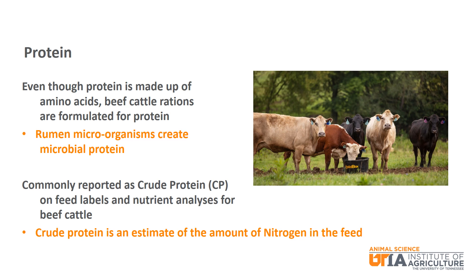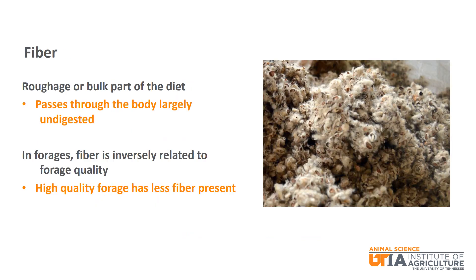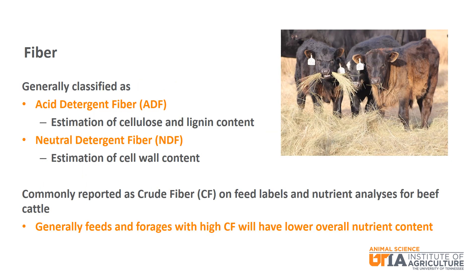Crude protein is an estimate based on the amount of nitrogen present in the feed. Fiber is the roughage or bulk part of the diet that passes through the body largely undigested by the animal. When talking about forages, fiber is inversely related to forage quality, meaning that the higher the quality of the forage, the less fiber that is present. Fiber is generally classified as acid detergent fiber, or ADF, and neutral detergent fiber, or NDF. Acid detergent fiber is an estimation of cellulose and lignin content, while neutral detergent fiber is an estimation of cell wall content. Fiber is commonly reported as crude fiber, or CF, on most feed labels, and feeds and forages with a higher crude fiber will generally have a lower overall nutrient content.